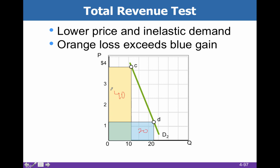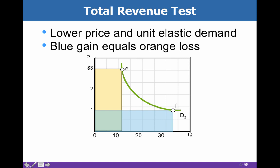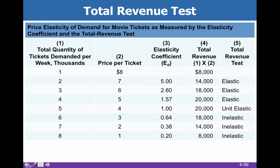For unit elasticity, at $3 we sell 10 units, and we lower it to $1 and sell 30 — it doesn't particularly matter either way. Now, we have different elasticities along different points of a curve. For example, the quantity of movie tickets demanded per week in thousands: if we charge $8, we sell 1,000 tickets; if we charge $1, we sell 8,000 tickets. You can see all these different elasticity coefficients at each point.